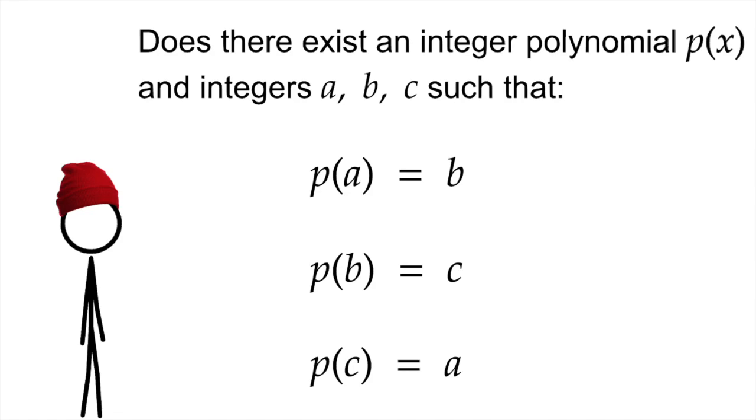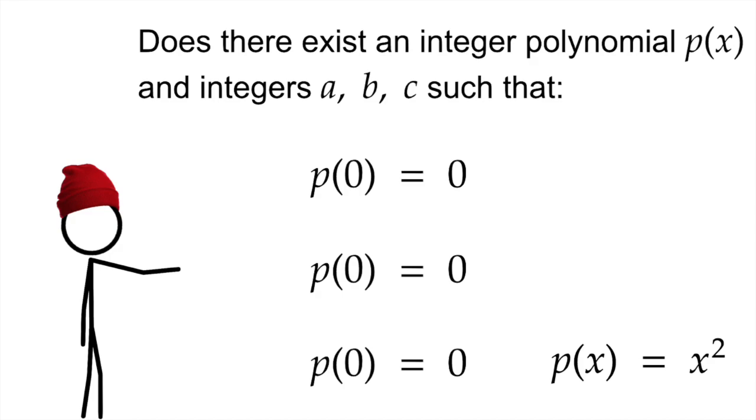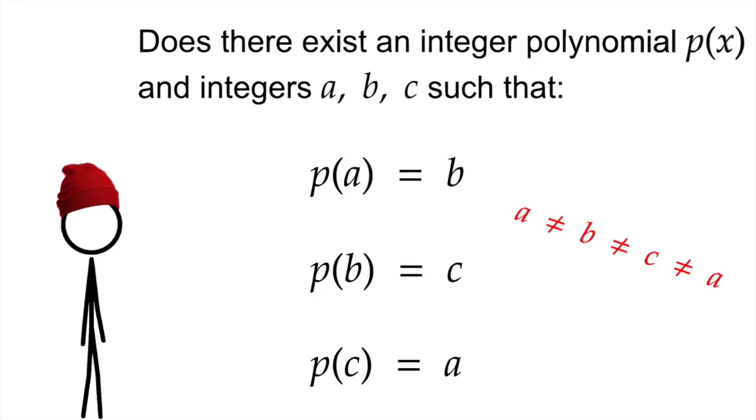Well, hang on. Of course it's possible. Actually, it's trivial. Just set a, b, and c equal to the same number, like zero. There, done, easy. No. Okay, that's stupid. New rule. The numbers have to be different. All three of them. They have to be distinct integers. Now is that possible?